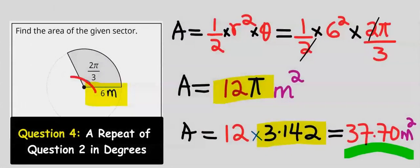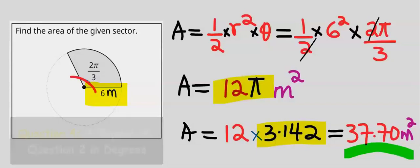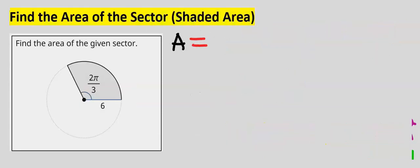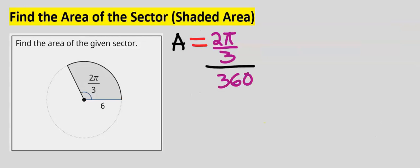We had solved this problem earlier using the radians formula. Let's repeat the solution using the degrees formula. Using the degrees formula, we have: central angle divided by 360, multiplied by the area of the circle. But the central angle is in radians, and this formula is for degrees.